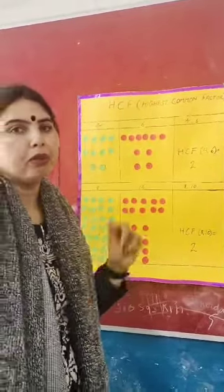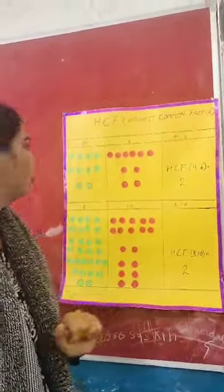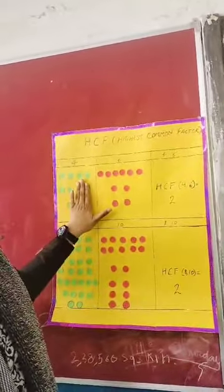As number 4 is more than these 2 circles, so we remove 2 circles from left hand side.